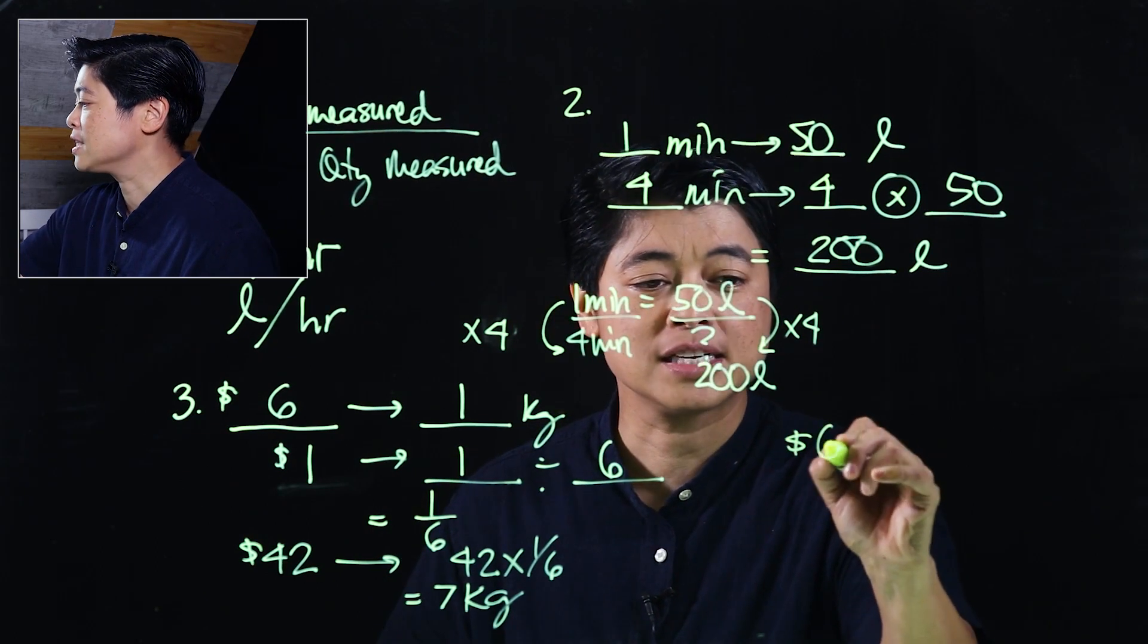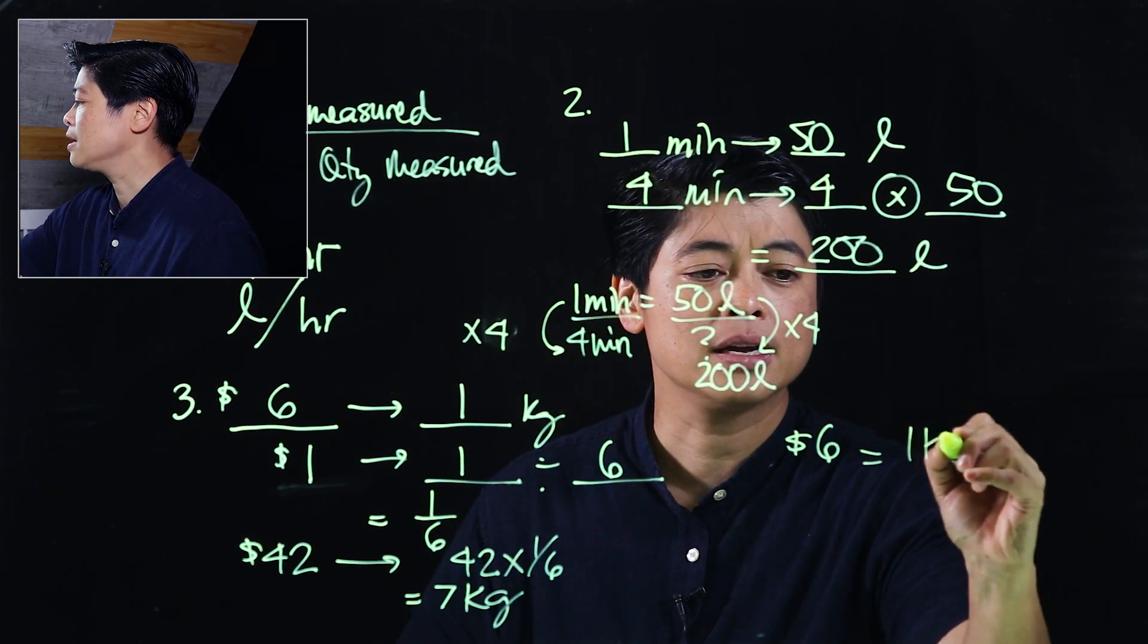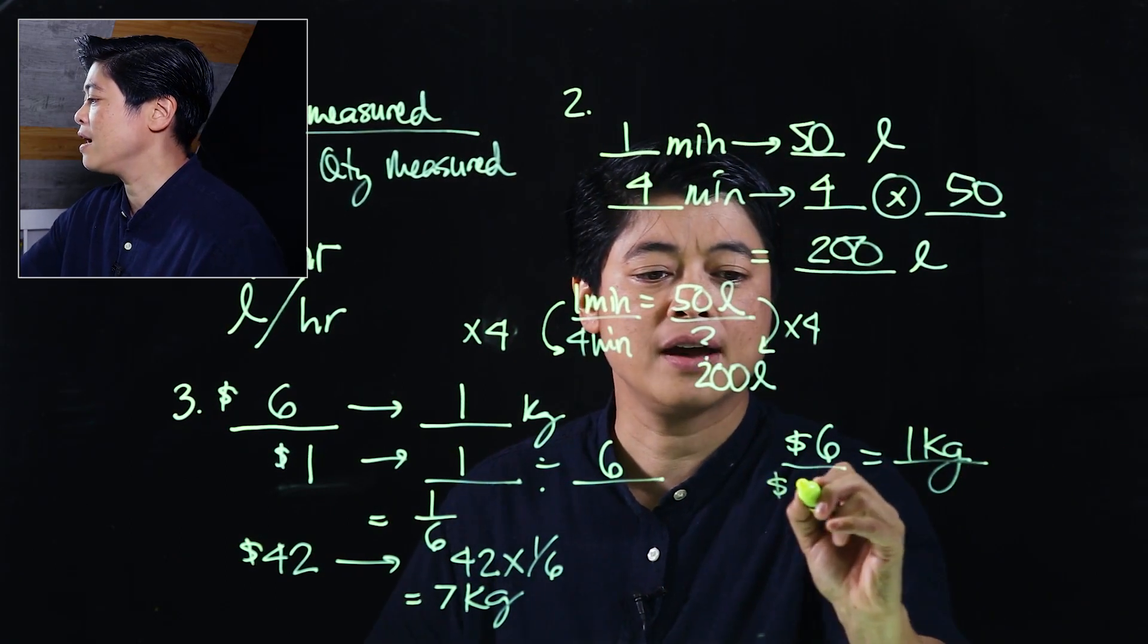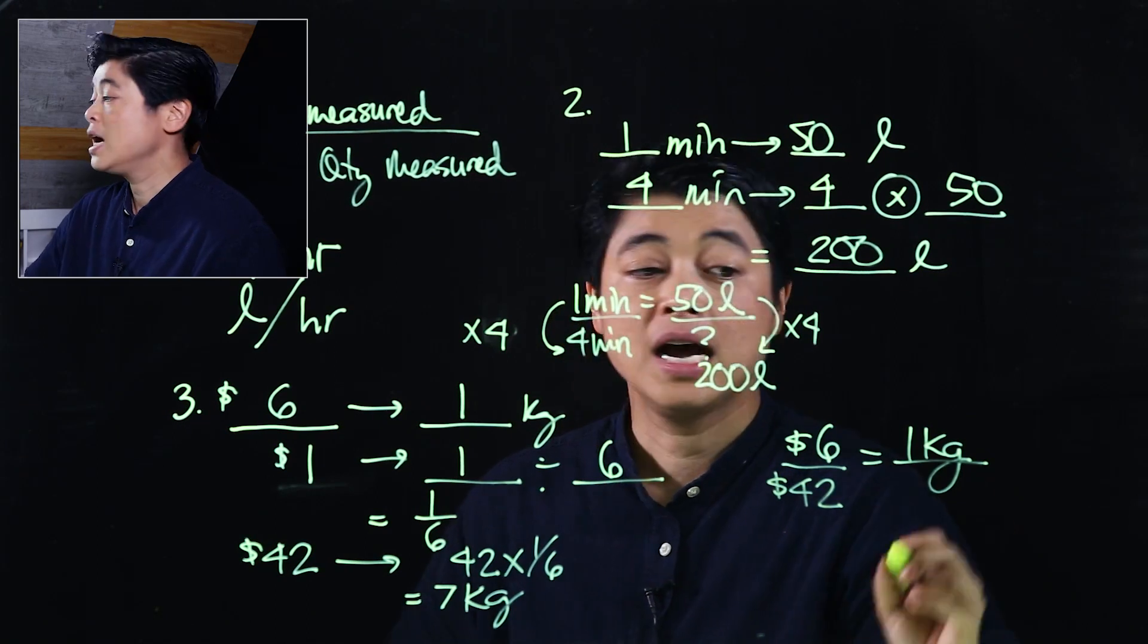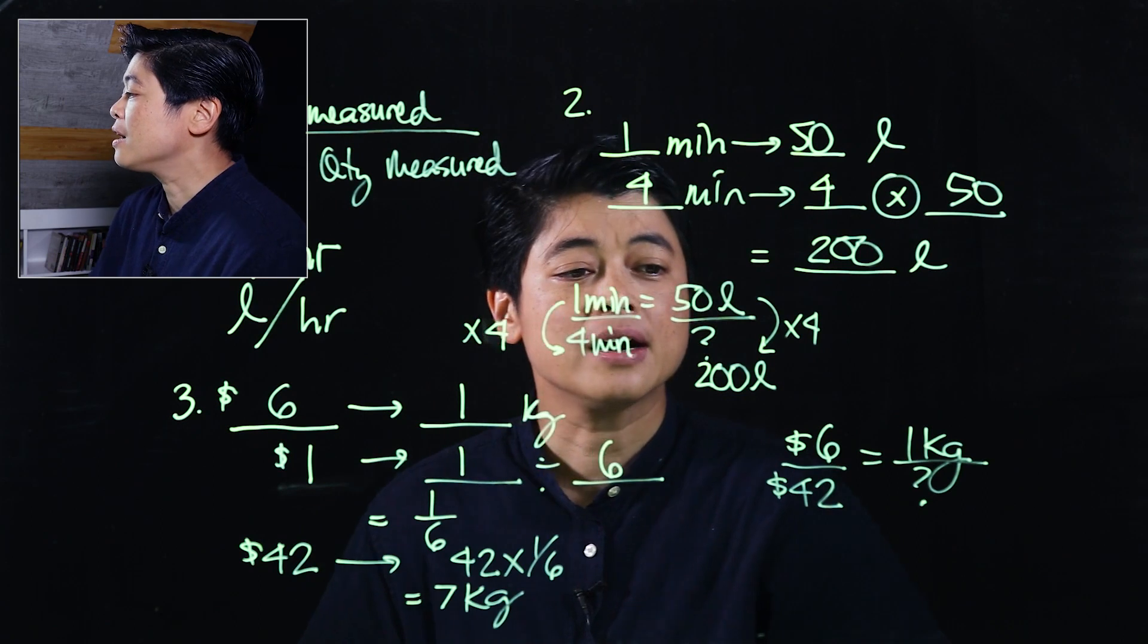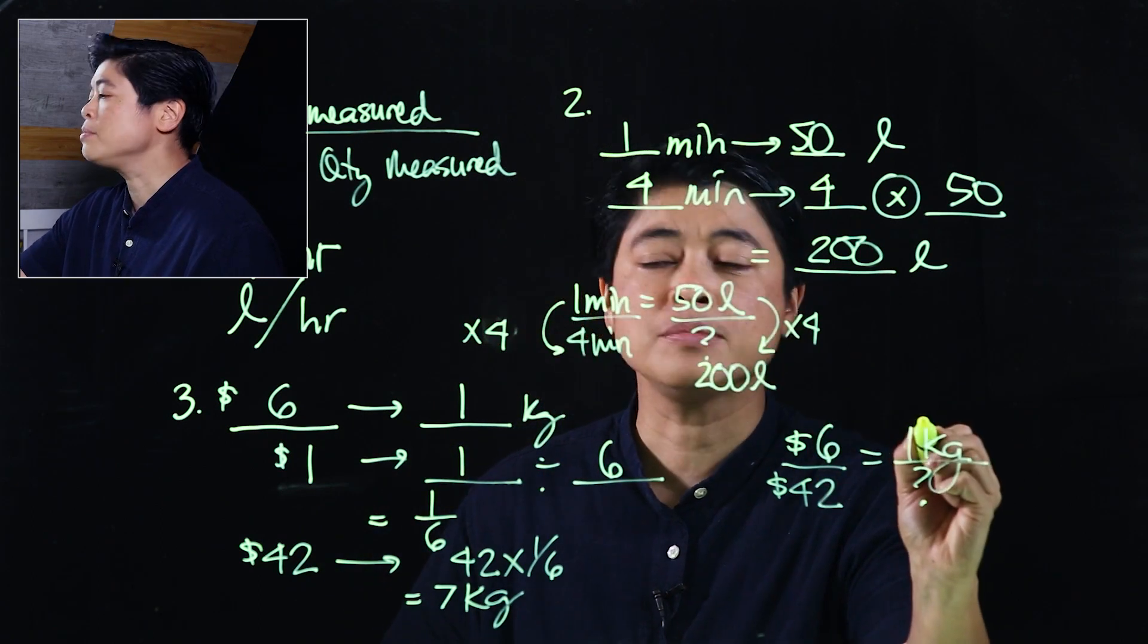So the easier version would be: I know that it's six dollars is equal to one kilogram. We have 42. How many kilograms can we buy with those?